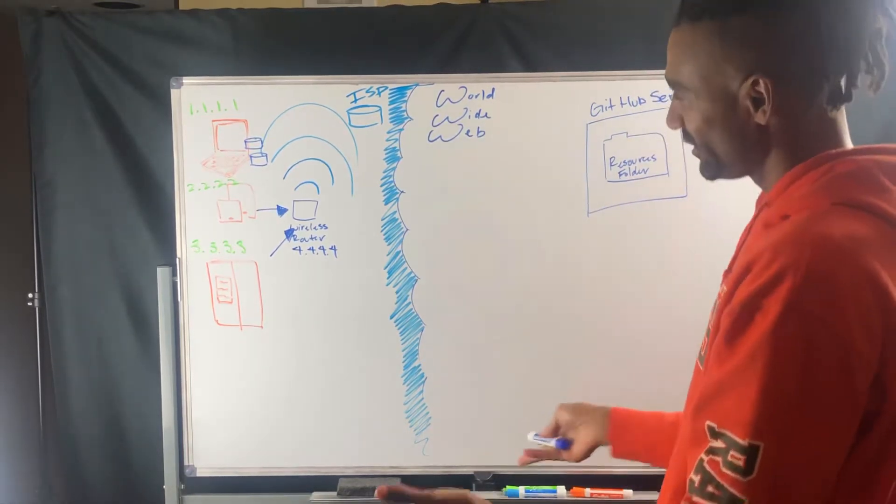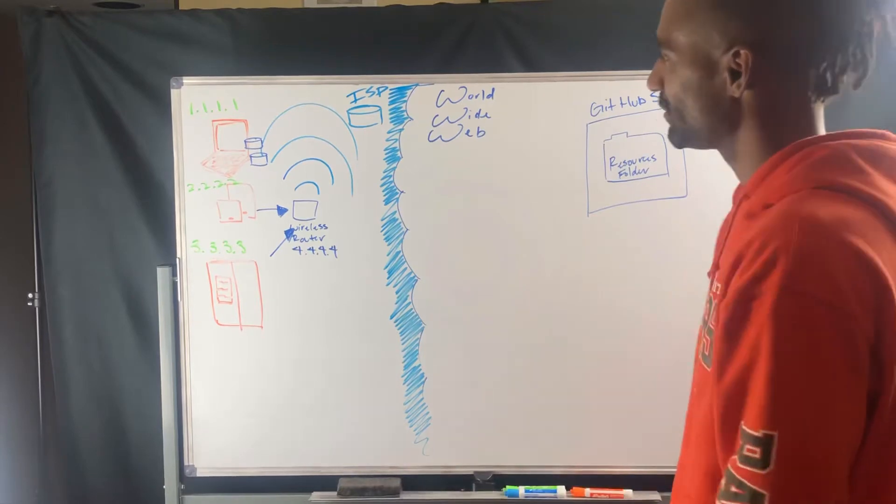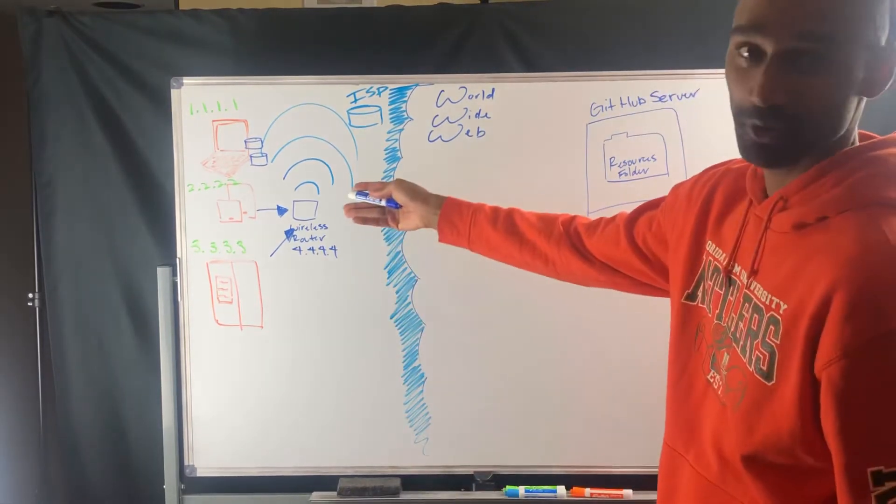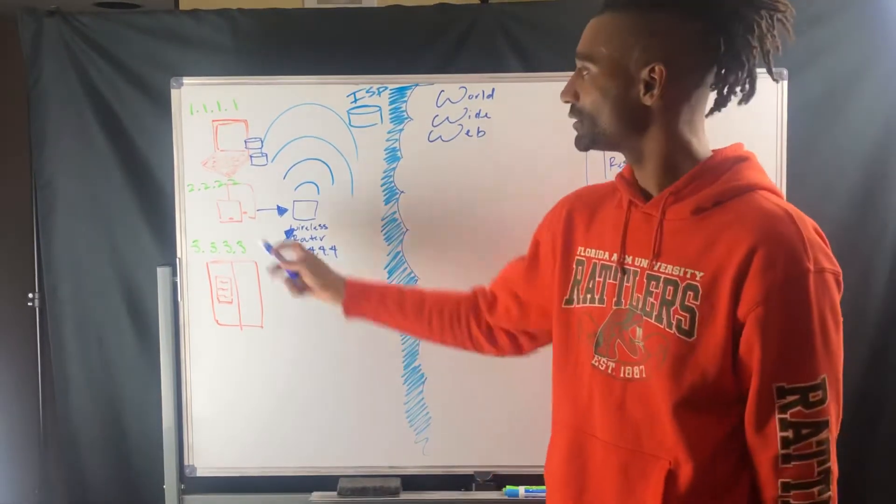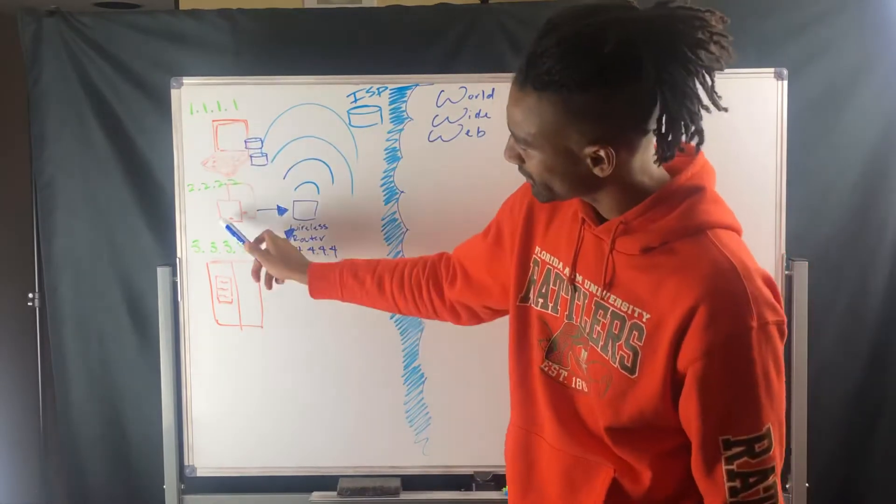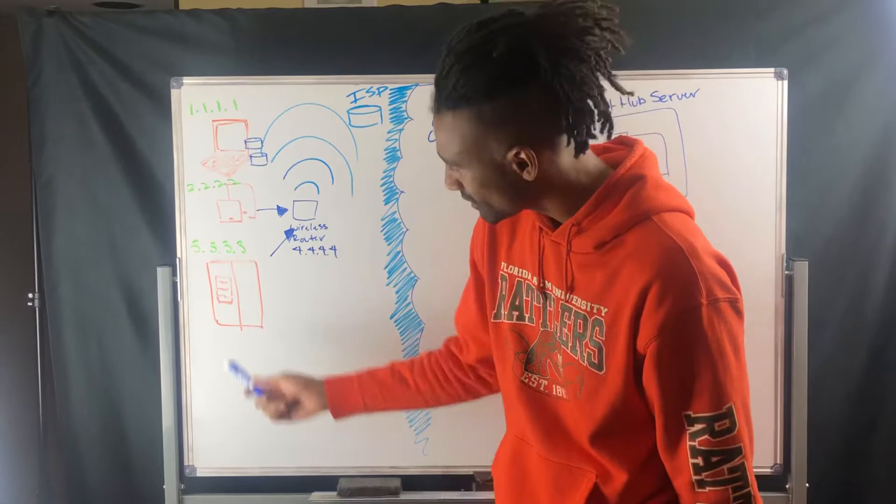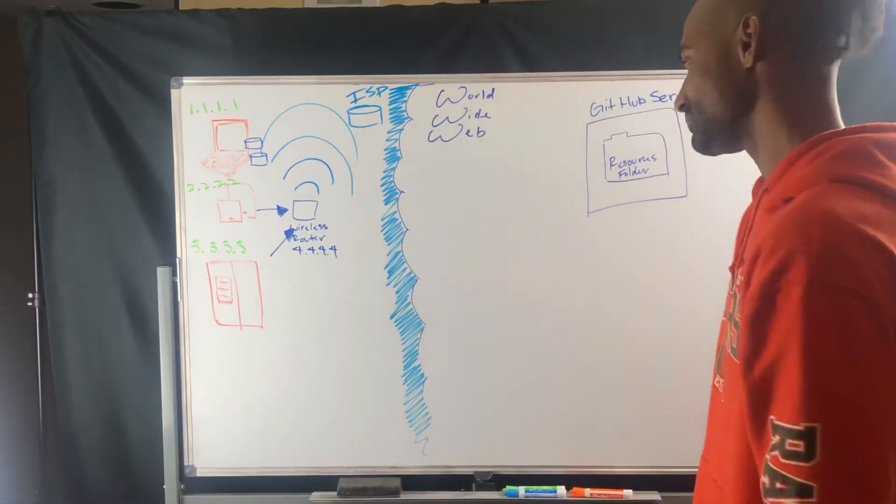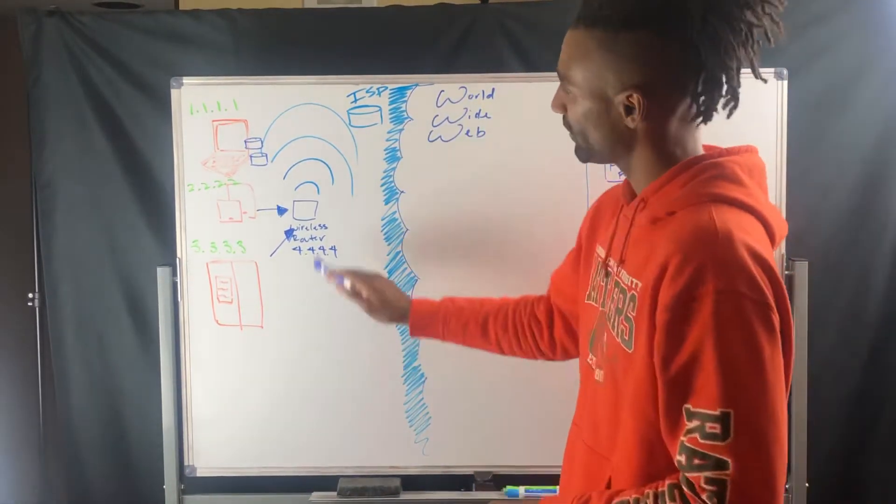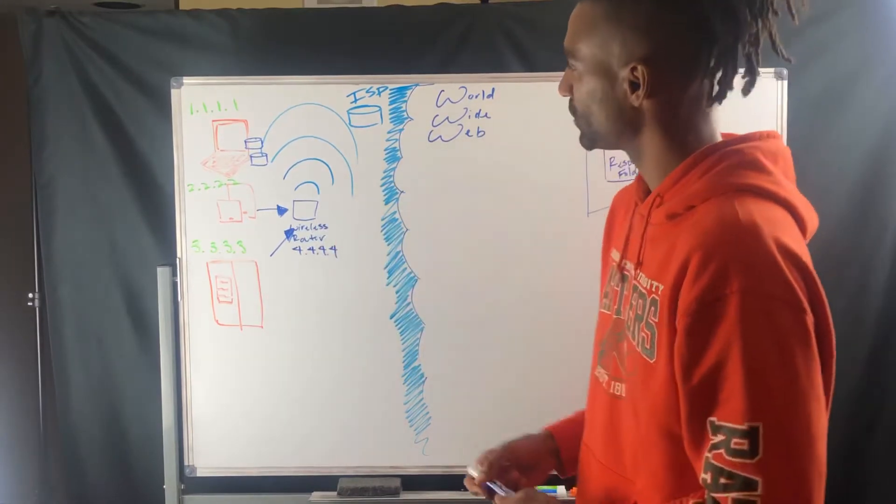So this right here, we have a general layout of your typical home. Got your laptop, you got your cell phone, and you got your tablet, and you got your internet of things refrigerator there. I don't know if you have that or not, but we have a wireless router in our house as well.